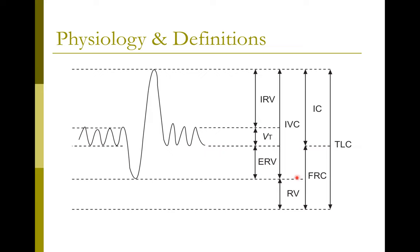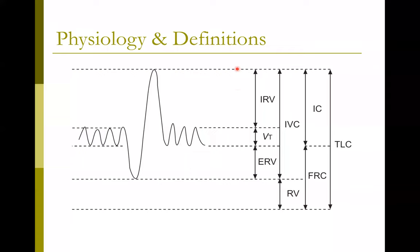The difference between FRC and RV is ERV — expiratory reserve volume. Then we have tidal volume, which is normal tidal breathing. Next is inspiratory reserve volume — the amount of volume we can inhale at the end of normal inhalation. If you're breathing in and out and you take a breath in, there is still quite a bit of air you can still inhale. That amount between the end of normal inspiration and total lung capacity is inspiratory reserve volume.